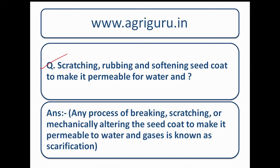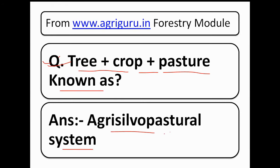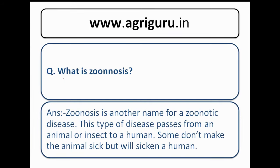Question number 40 is about scratching, rubbing, and softening the seed coat to make it permeable to water. We don't have the full question, but the answer is scarification. Question number 41 from the forestry module: tree plus crop plus pasture is known as the agrisilvopasture system. Question number 42: what is zoonosis? Zoonosis is a type of disease that passes from animals to humans.